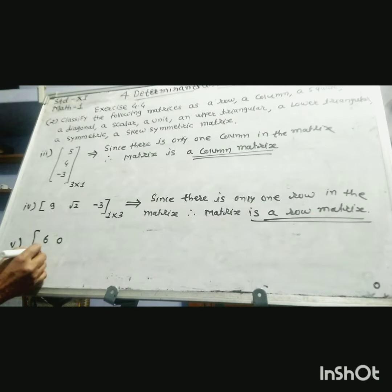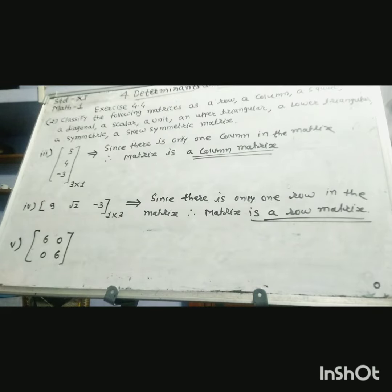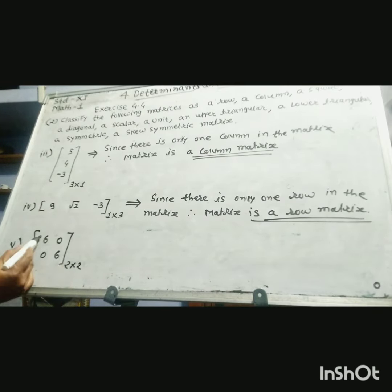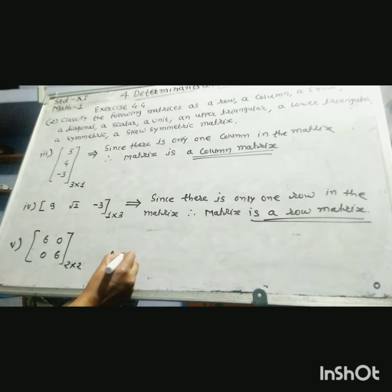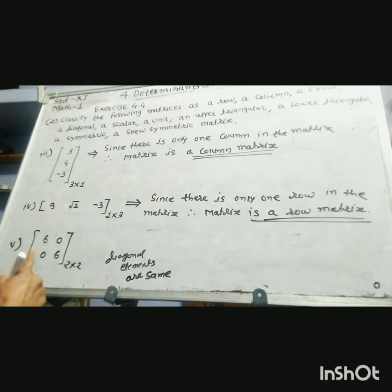The 5th example has elements 6, 0, 0, 6. This is a square matrix because the number of rows and number of columns are the same. The diagonal elements are the same — that is, 6 and 6 — and all elements below and above the diagonal are 0.